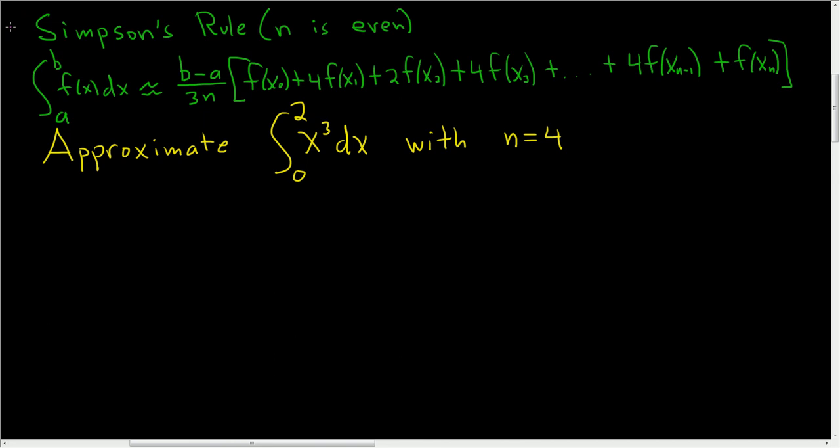Simpson's rule is used to approximate definite integrals. It only works when n is even, so the n you use has to be an even number, and it basically says that the definite integral from a to b is approximately equal to this stuff over here on the right hand side, this huge mess.